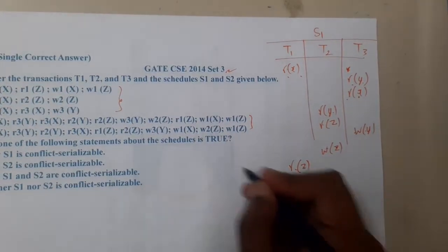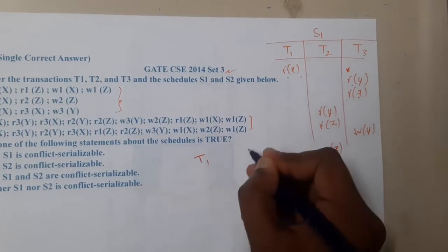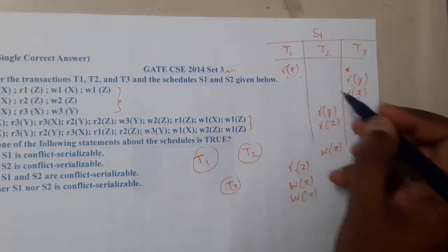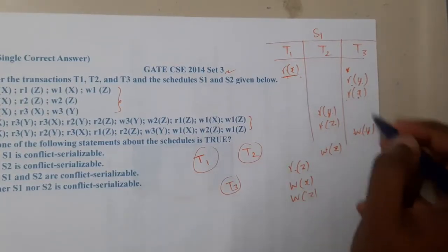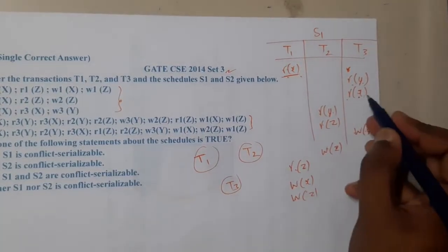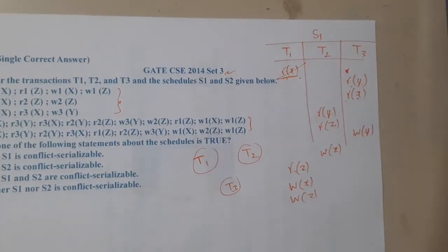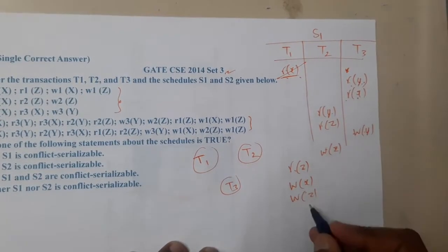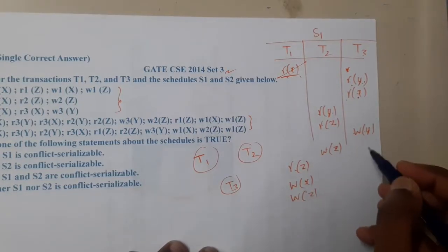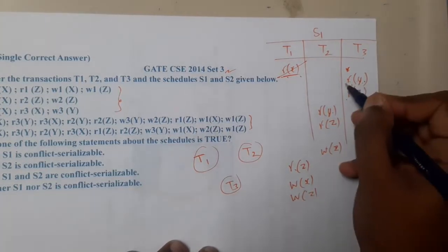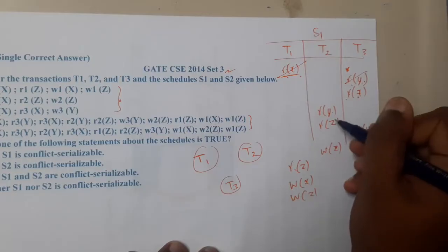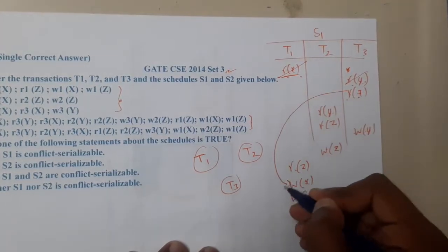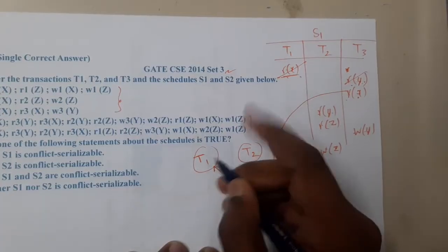Now let us draw the precedence graph with T1, T2, T3. Read(X) — no write of X in another column, so no clash. Read(Y) — no write of Y in another column, no issue. Then we see Read(X) in T3 and Write(X) in T1, so there is a conflict: T3 to T1 — there is one edge T3→T1.